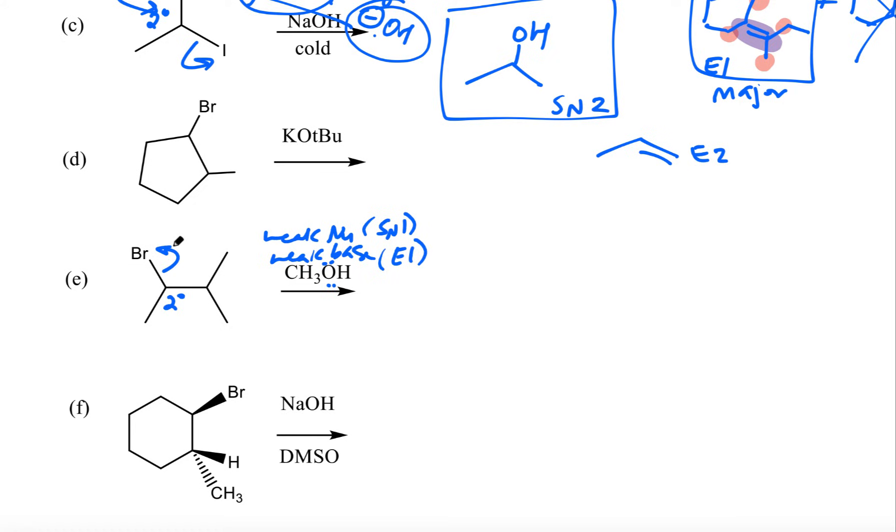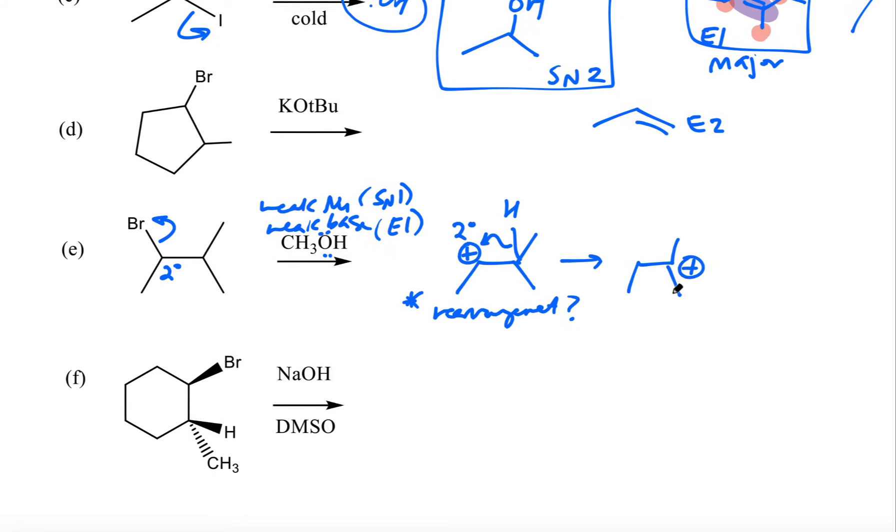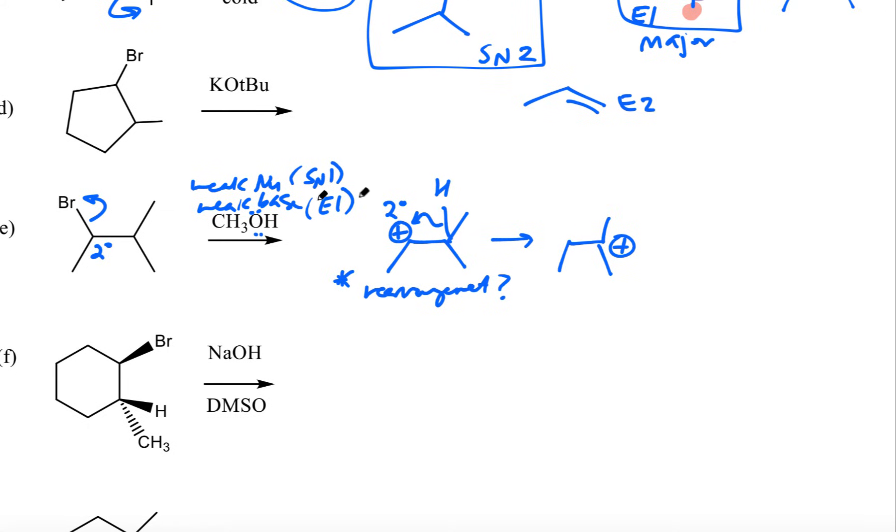And then you always, whenever you make a carbocation, you want to watch out for a rearrangement. You just have to ask yourself, is this likely to rearrange? What do you guys think? This is secondary. Is there a way for it to gain stability by rearrangement to a neighboring carbon? I would say, yes, this is tertiary here. If I could move that positive charge here, I'm going to shift the hydrogen over there. And that's going to allow me to form a tertiary carbocation.